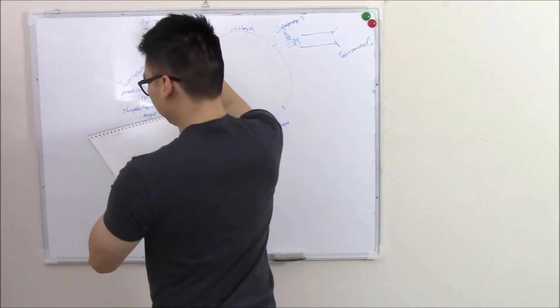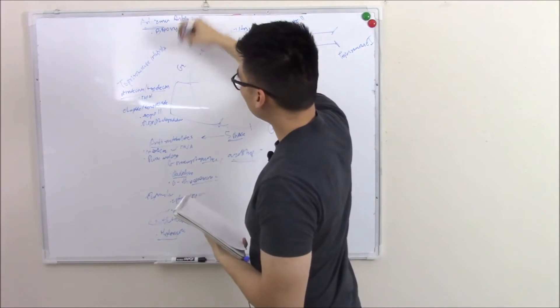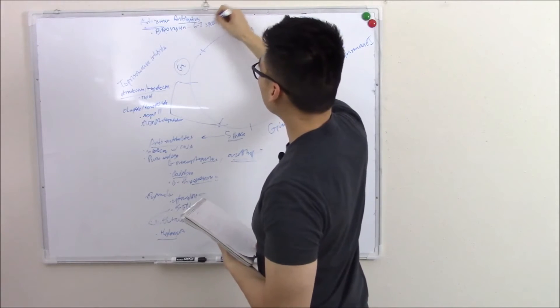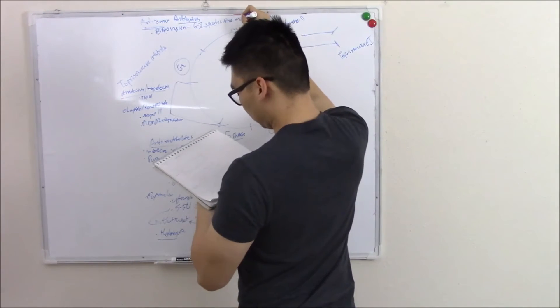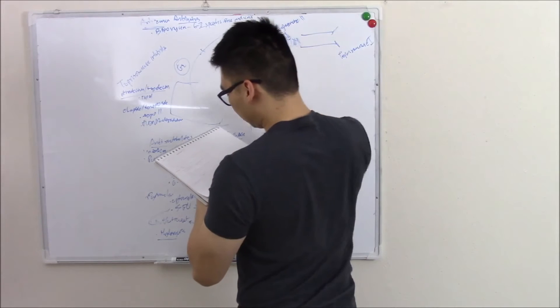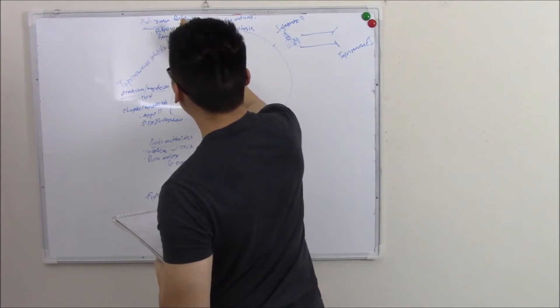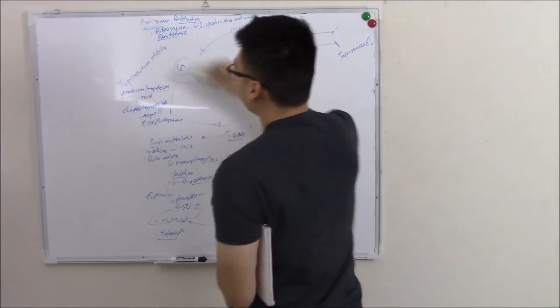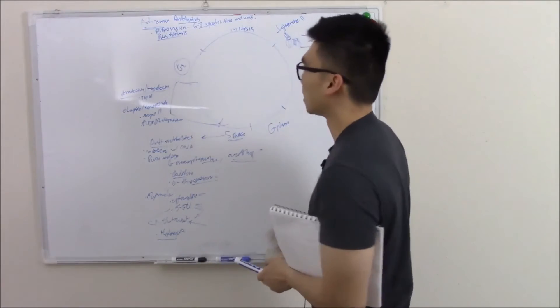The biggest one you should know is bleomycin. Bleomycin is the only G2 specific drug. You've got to know that cold. So bleomycin is a G2 specific drug. It makes free radicals. And the main side effect is pulmonary fibrosis. It causes life-threatening pulmonary fibrosis if you're not careful. So you always have to monitor lung function tests in someone taking bleomycin.